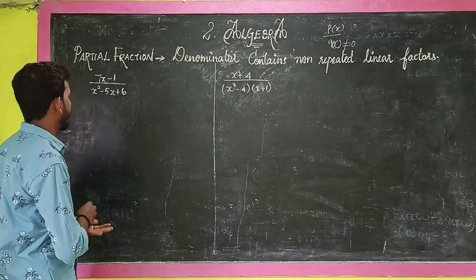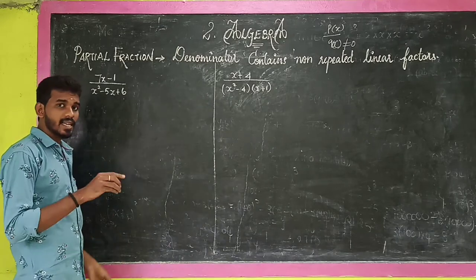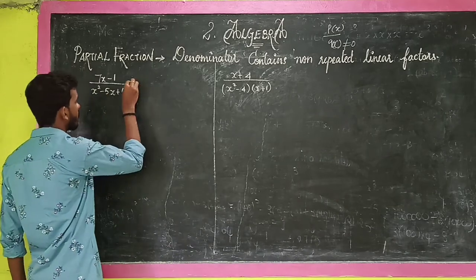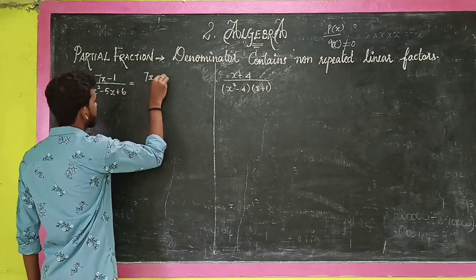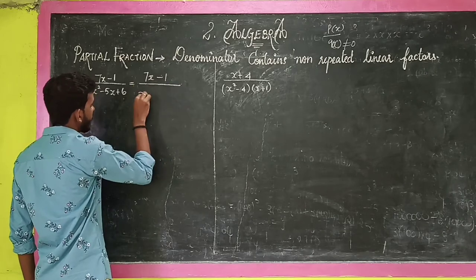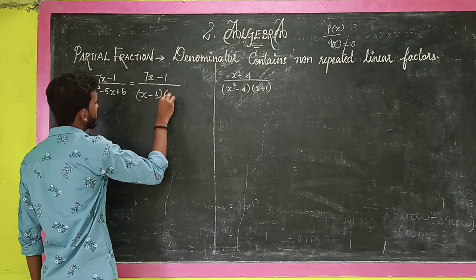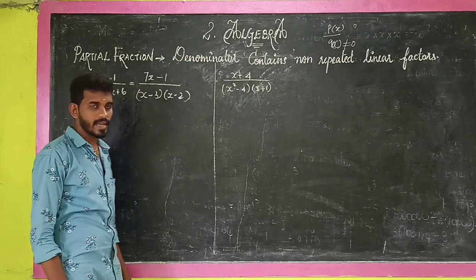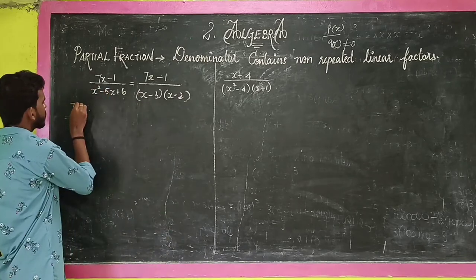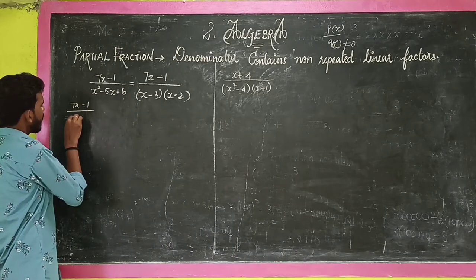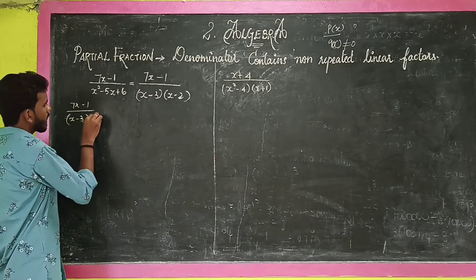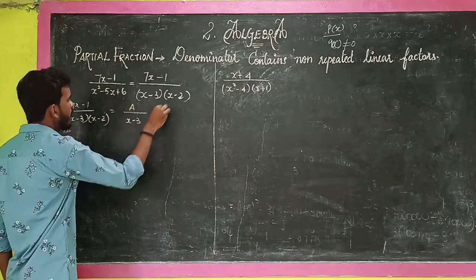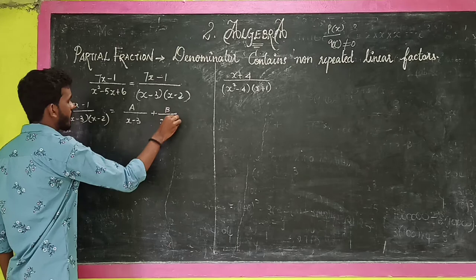Let's move on to the example problem. First, the denominator contains non-repeated linear factors. I have taken the example: 7x minus 1 divided by (x minus 3)(x minus 2). This equals A divided by (x minus 3) plus B divided by (x minus 2).